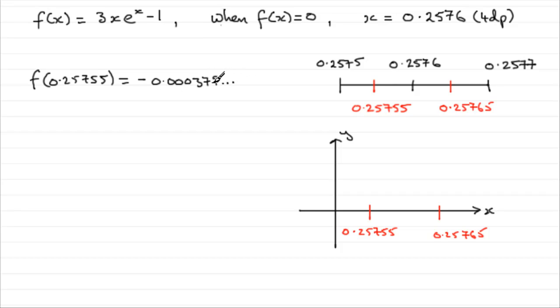So we'll work out what f of 0.25755 is, and if you put this value for x through here into your calculator, you should find you get minus 0.000379, and so on. So a negative value very close to 0. So that value would be down here. Now, what I'm hoping for is that this value, when we do f of 0.25765, now comes out as a positive value.